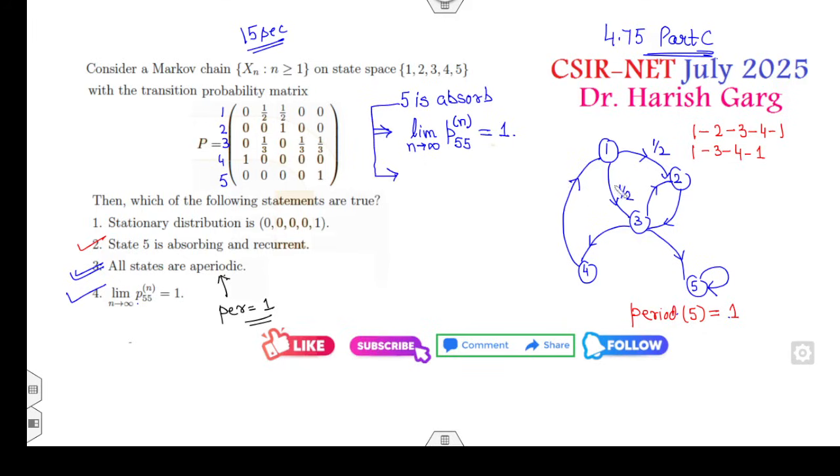Now because what is that? Five is my absorbing state. So what does it mean? All the states once it will end, like 1 to 3 then 3 to 5, then it is absorbed. Similarly if you start from 2, you can reach at 3 and then 5. You can 3 to 5, all are absorbing at 5. Therefore the stationary probability of the state 5 is my 1. There is no issue about that because state 5 is my absorbing state.